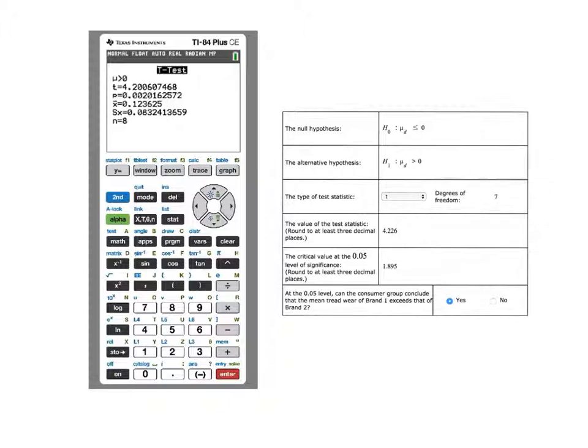We are concluding, after we are comparing the test statistic to the critical value, that there is enough evidence to reject the null hypothesis, and the consumer group can conclude that the mean tread wear of brand one definitely exceeds that of brand two. So I say yes.